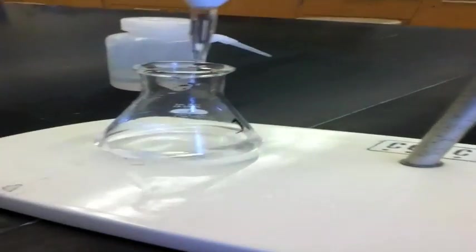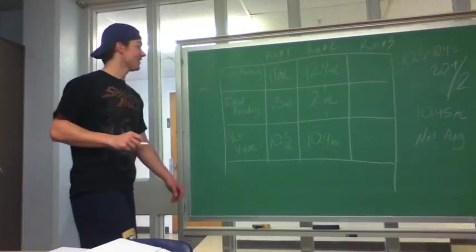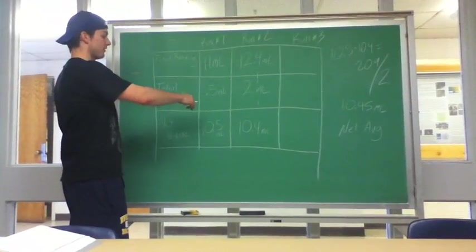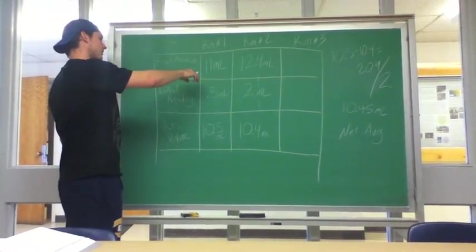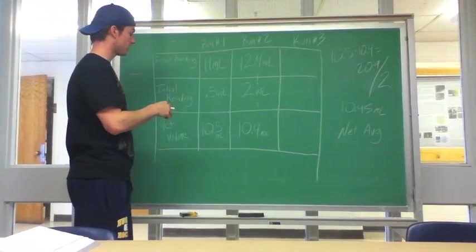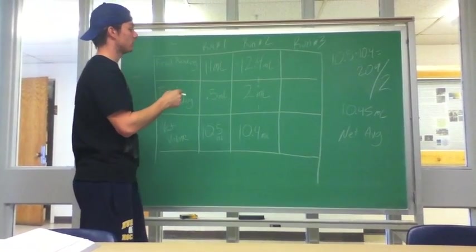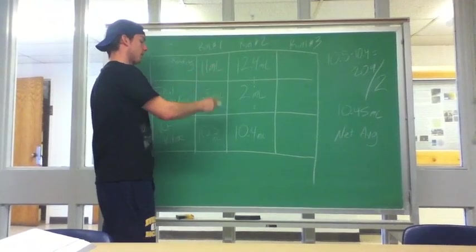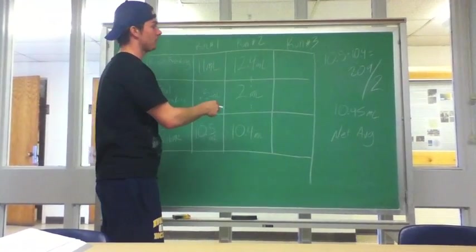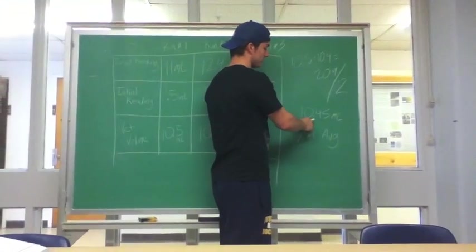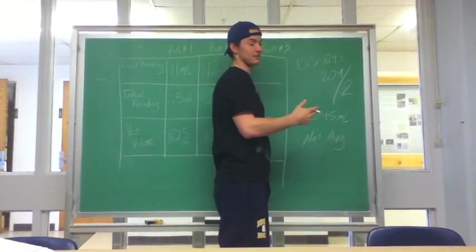Record your final reading on the burette. For our first run, we started off at 0.5 milliliters and our final reading was 11 milliliters, which makes the net volume of titrant used 10.5. In run 2, we started at 2 milliliters and went down to 12.4, giving us 10.4. Adding those two together and dividing by 2, you get the net average, which is 10.45 milliliters.